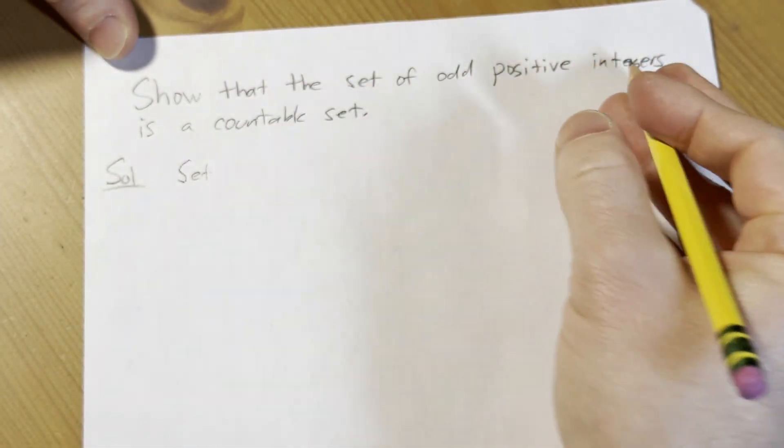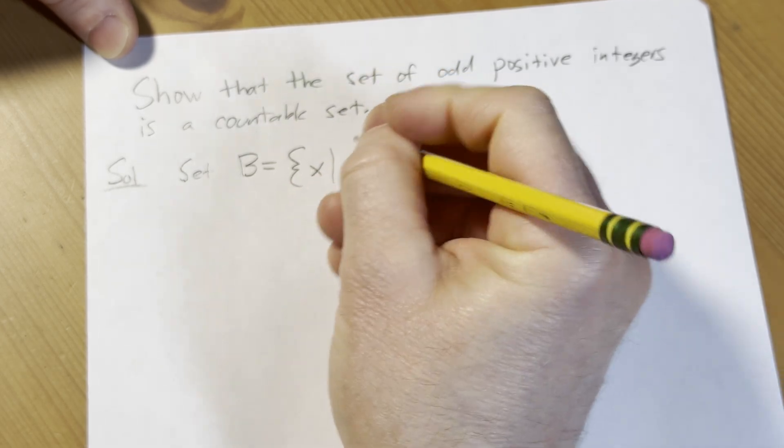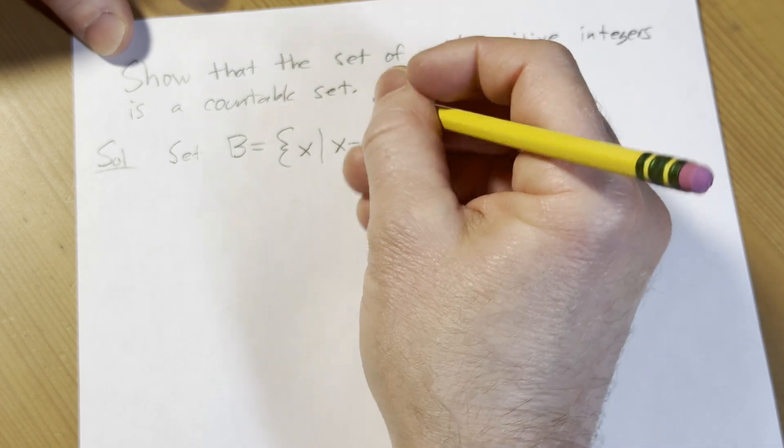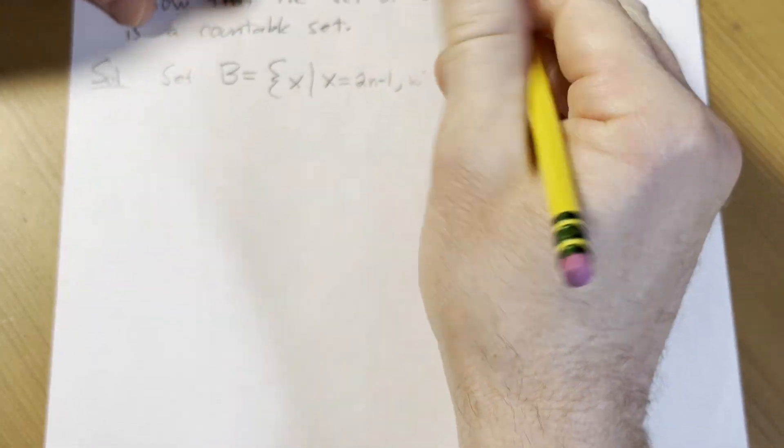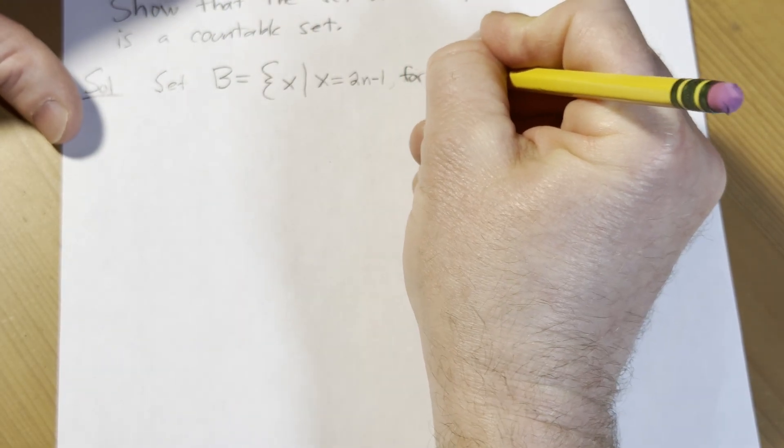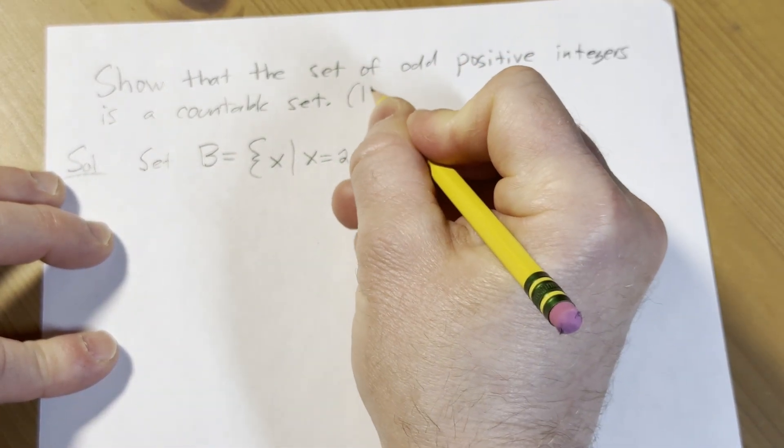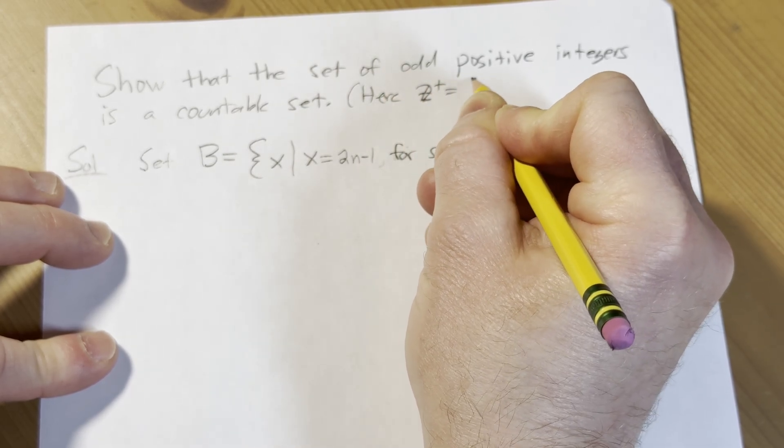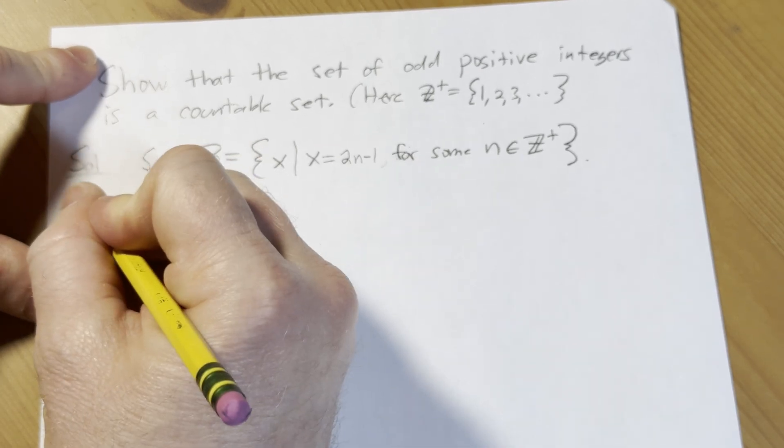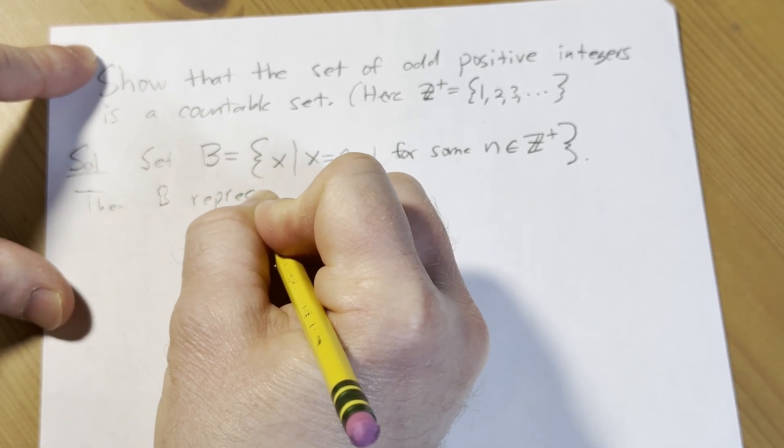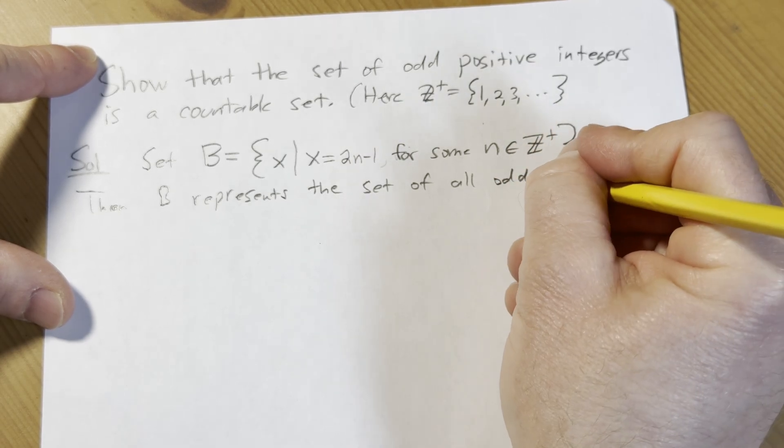We're going to show that the set of odd positive integers is a countable set. Set, we need a name for the odd positive integers. Let's just call it B. We're going to let B be equal to the set of all x such that x equals 2n minus 1 for some n in Z plus. So Z plus is the set of positive integers. This is just the odd positive integers, and so B represents the set of all odd positive integers.